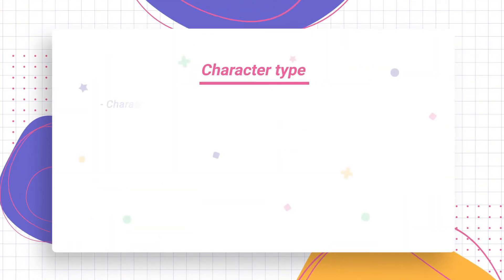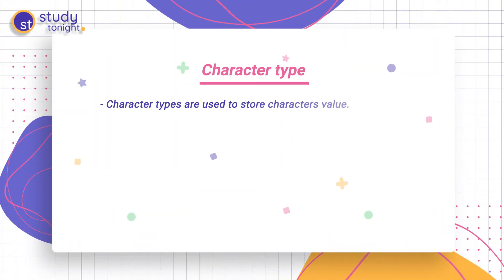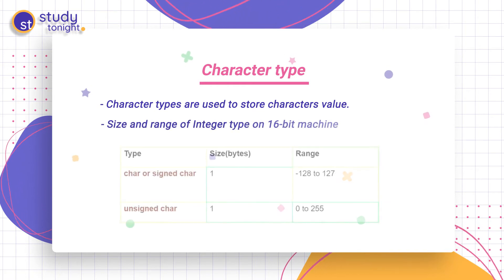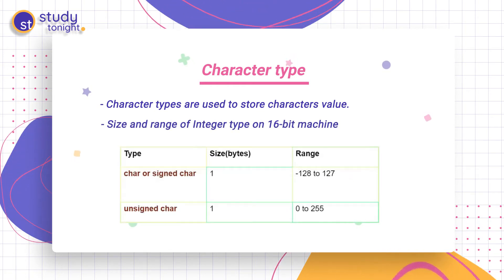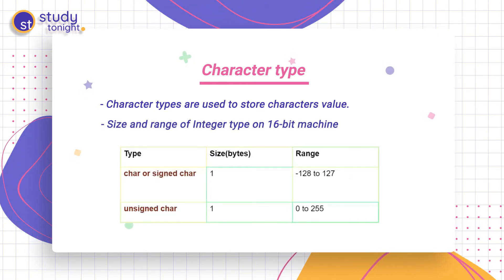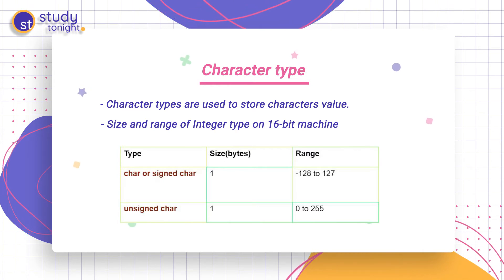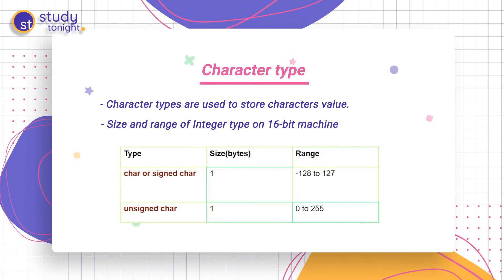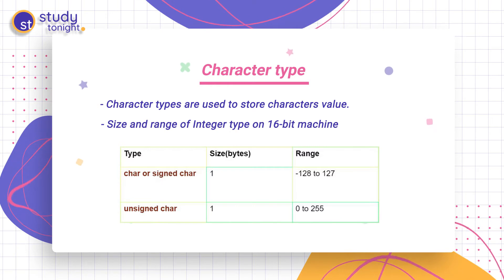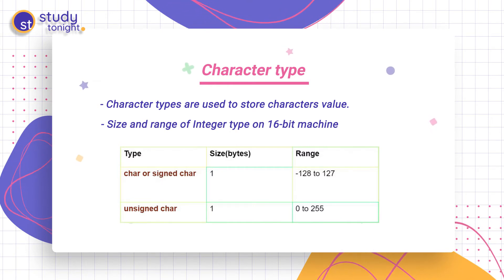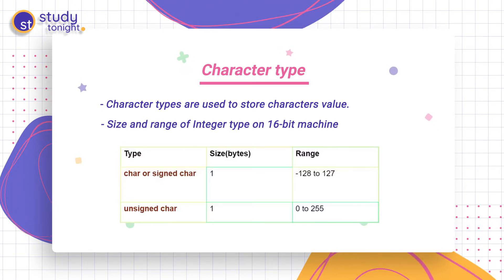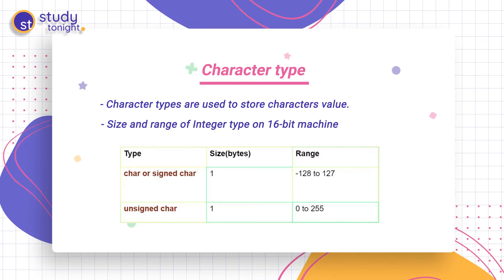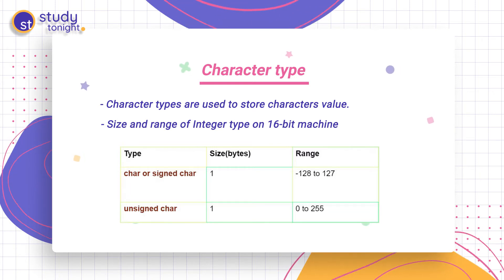Then character type — character types are used to represent character values. The size and range of character type on a 16-bit machine: signed char takes one byte, unsigned char takes one byte. The range for signed char is minus 128 to 127, and for unsigned char it is zero to 255.